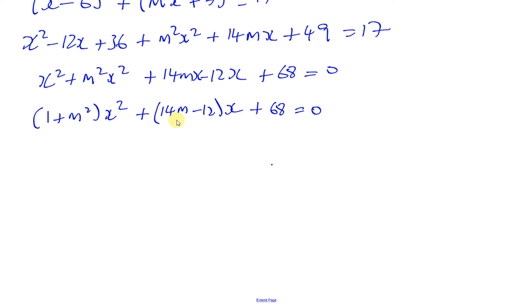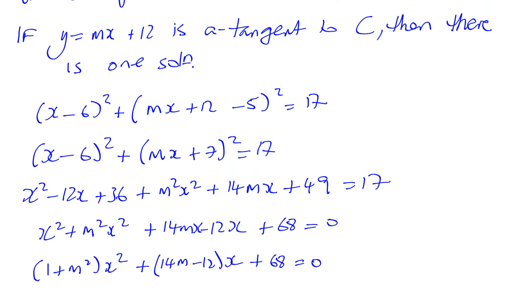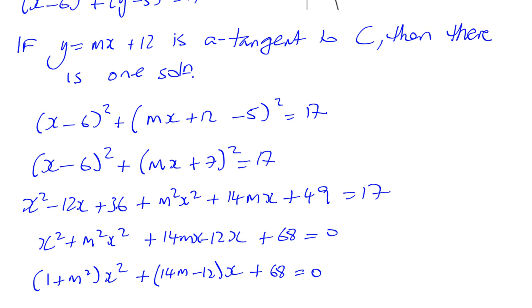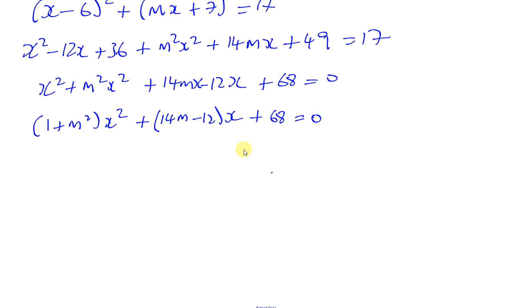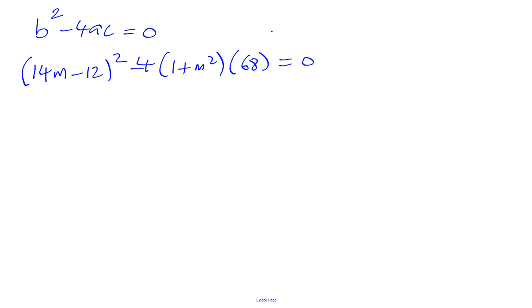This is a quadratic equation, and as the line y = mx + 12 is a tangent to this circle, this equation should have only one solution. So if it has one solution, then the discriminant should equal 0. So b² - 4ac has to equal 0.